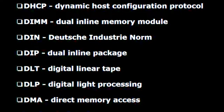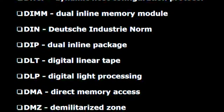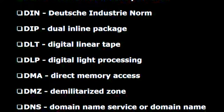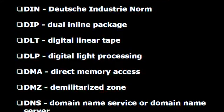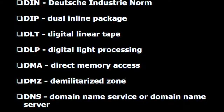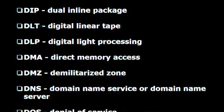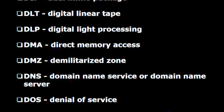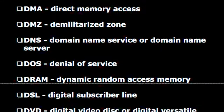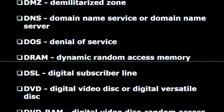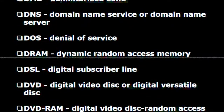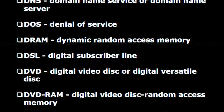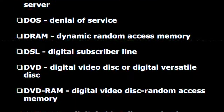D.I.N. — Deutsch industry norm. D.I.P. — Dual inline package. D.L.T. — Digital linear tape. D.L.P. — Digital light processing. D.M.A. — Direct memory access. D.M.Z. — Demilitarized zone. D.N.S. — Domain name service or domain name server. D.O.S. — Denial of service. D.R.A.M. — Dynamic random access memory. D.S.L. — Digital subscriber line.